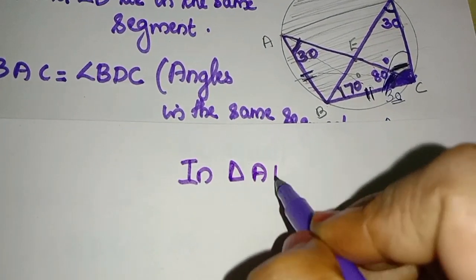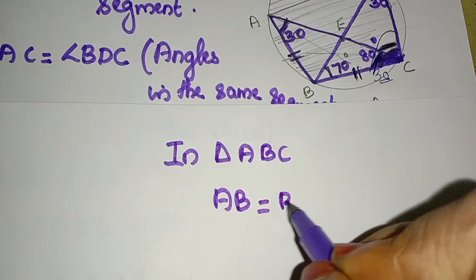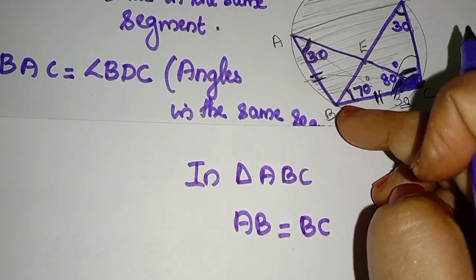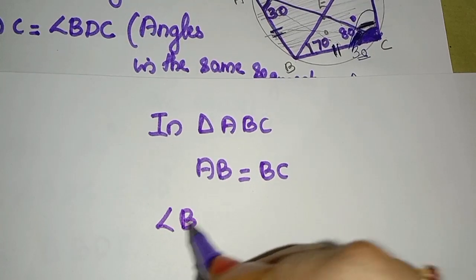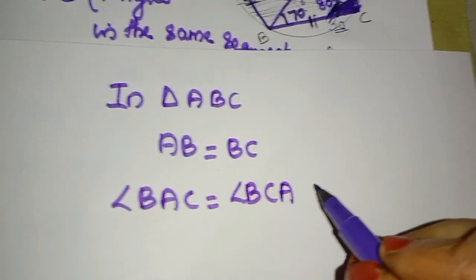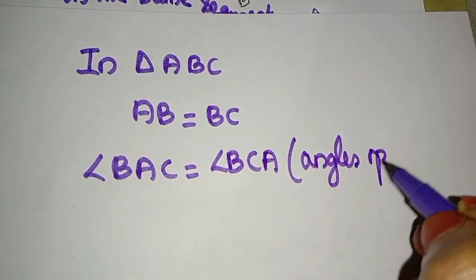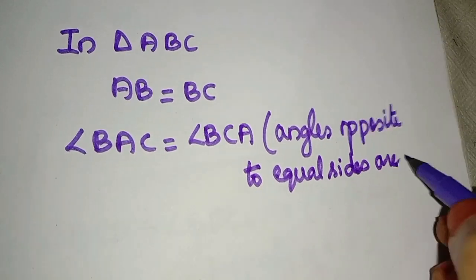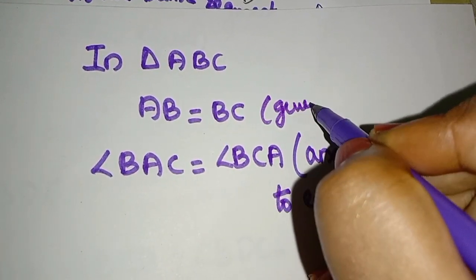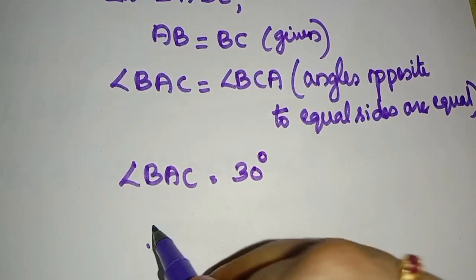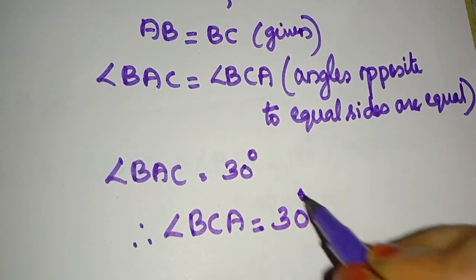Now for the second part: in triangle ABC, AB is equal to BC. So the angles opposite to equal sides are equal. Therefore angle BAC is equal to angle BCA. Since angle BAC is 30 degrees, angle BCA equals 30 degrees.